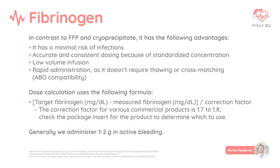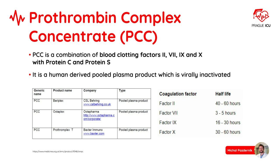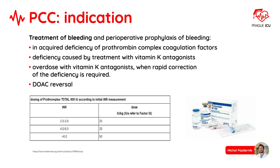Prothrombin complex concentrate is a combination of blood clotting factors 2, 7, 9, and 10 with protein C and S. It is a human-derived pooled plasma product which is virally inactivated. PCC indications include treatment of bleeding and perioperative prophylaxis of bleeding in acquired deficiency of prothrombin complex coagulation factors, deficiency caused by treatment with vitamin K antagonists, in overdose with vitamin K antagonists when rapid correction of the deficiency is required, and it may also be used in DOAC reversal.